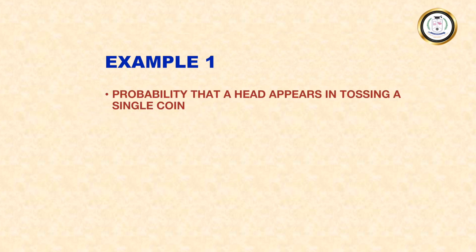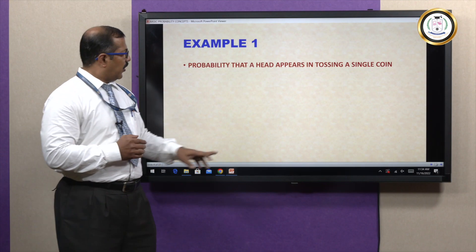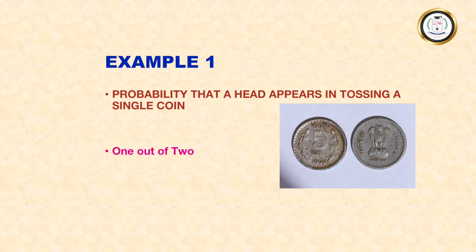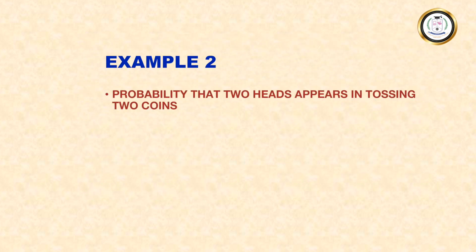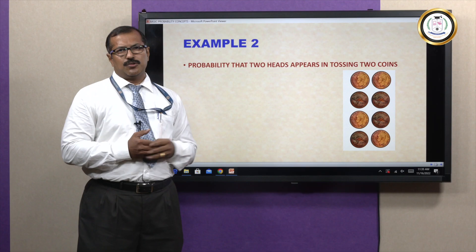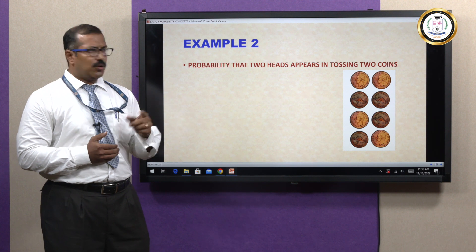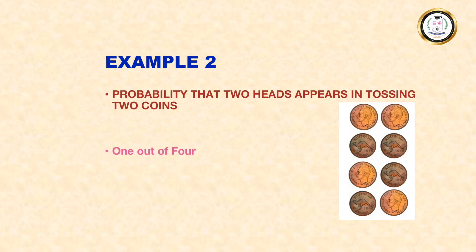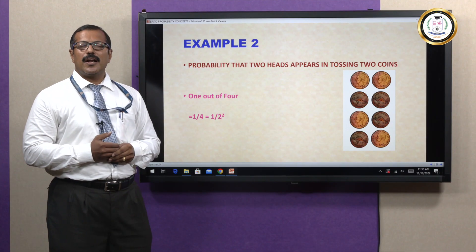Let us see some examples to understand more about this concept. First, what is the probability that a head appears in tossing one coin? When we toss one coin, the possibilities are head or tail — two possibilities — and what we want is head. So it is one out of two, represented as one by two. Supposing we are tossing two coins, there will be four possibilities: head-head, head-tail, tail-head, and tail-tail. We want two heads; there is one possibility favoring that. So it is one out of four, mathematically one by four. Since there are two coins, there will be two-squared possibilities, represented as one by two squared.